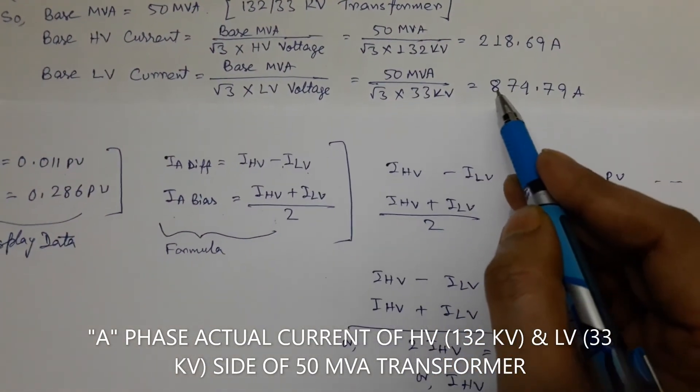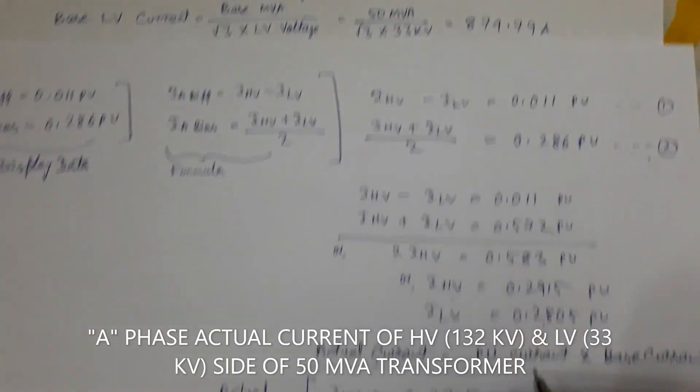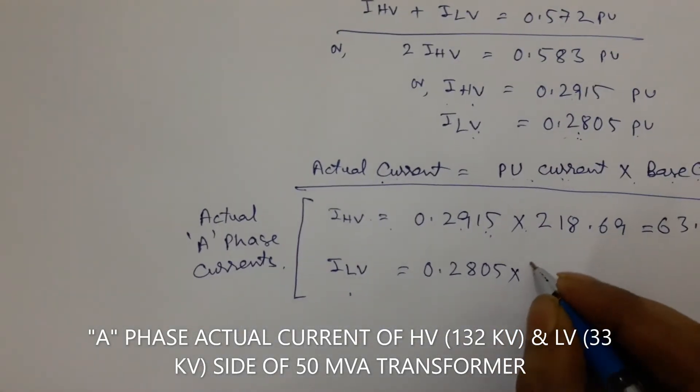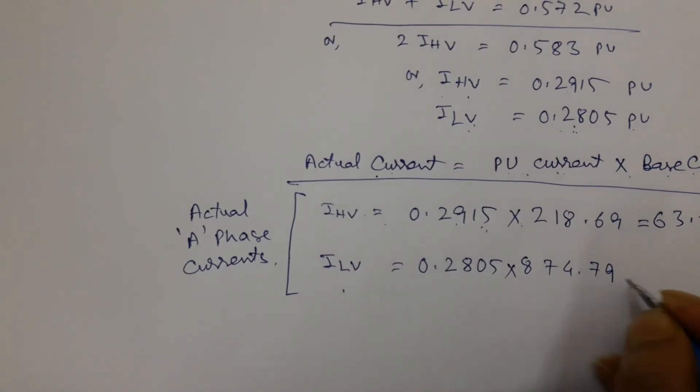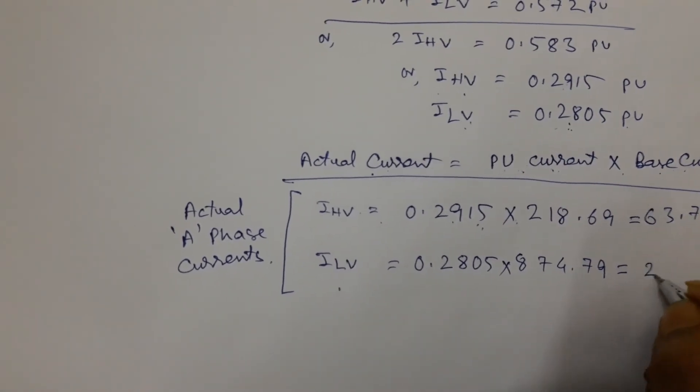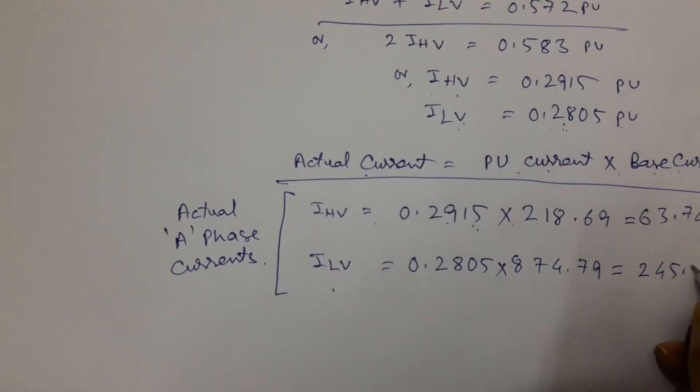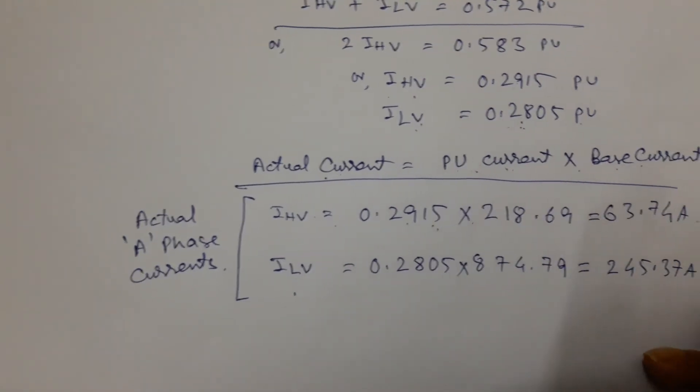So we write 874.79 ampere, and the result is 245.37 ampere. This is the value of LV side current of A phase.